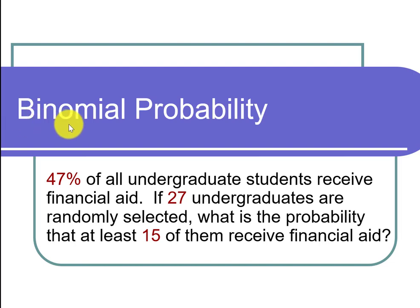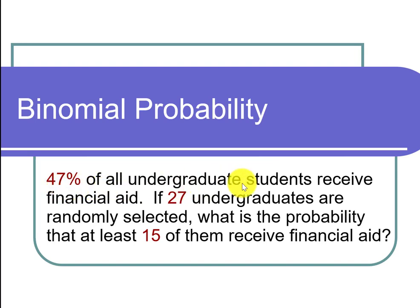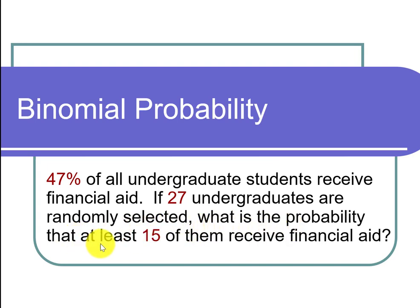This is a video on binomial probability. The question states 47 percent of all undergraduate students receive financial aid. If 27 undergraduates are randomly selected, what is the probability that at least 15 of them receive financial aid?